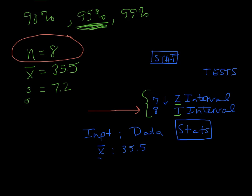And underneath that, you see that sample standard deviation symbol, the SX. And in this case, it's 7.2. So we type in 7.2 for that. It wants to know our sample size of N. So we put in 8.